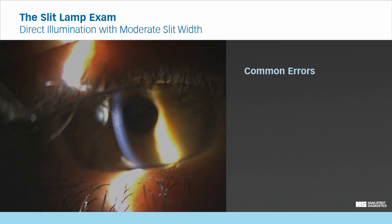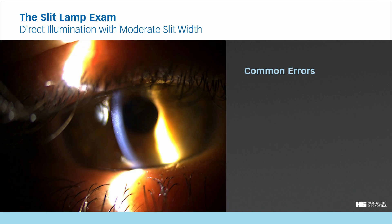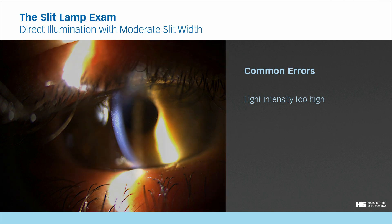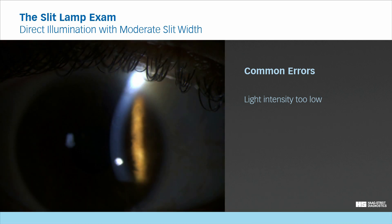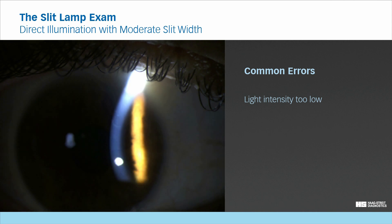Common errors. When examining the cornea with a light intensity which is too high, the patient will not cooperate well. If the intensity is too low, you might miss subtle changes on the cornea due to reduced light scatter. Here the same image is shown but with increased brightness, which makes this basement membrane dystrophy much more easily visible.